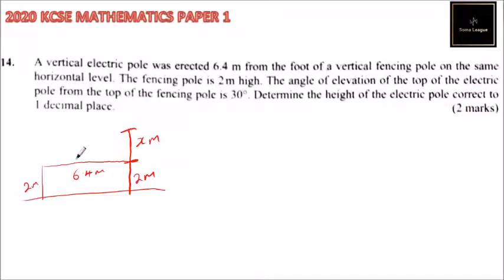This is 2 meters. We are also told that the angle of elevation here is 30 degrees. We need to find the height of the electric pole. This is also 6.4 meters.